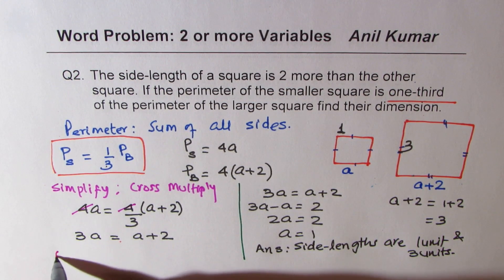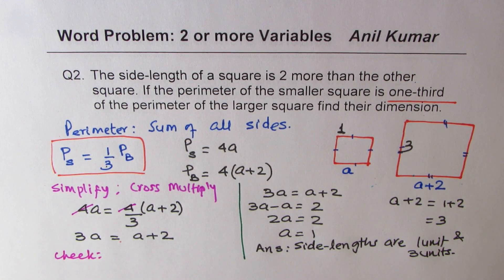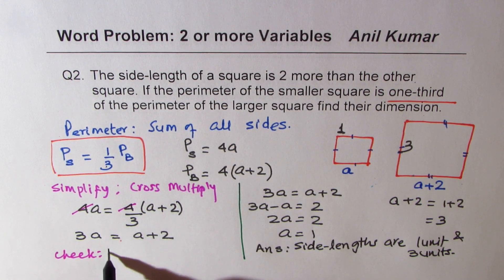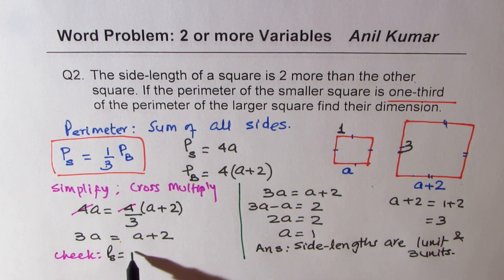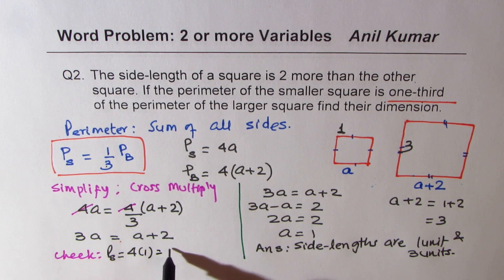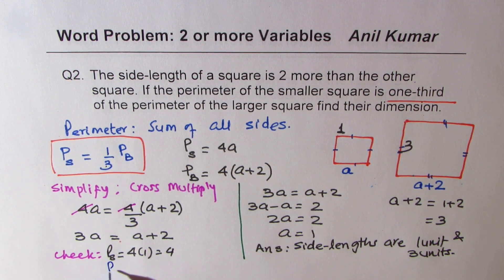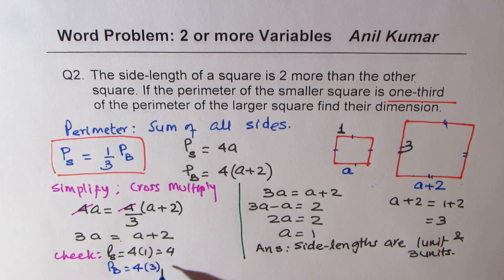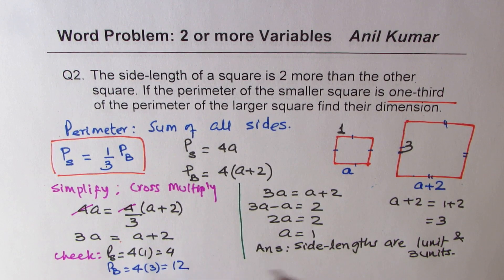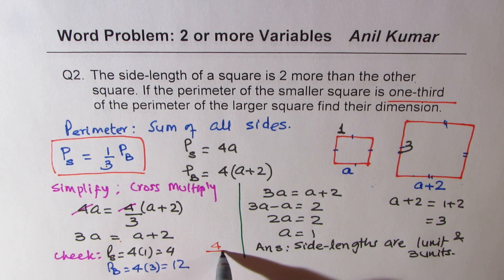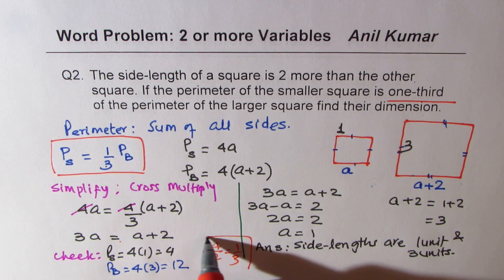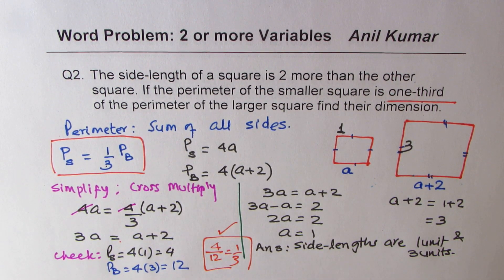You should also check your result. For the smaller square, perimeter is 4 times 1, which is 4. For the bigger square, perimeter is 4 times 3, which is 12. We know 4 divided by 12 is one-third — so that works. That is the right check, and that is how we should verify our result.